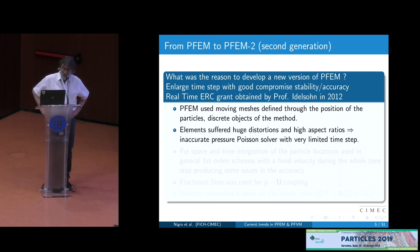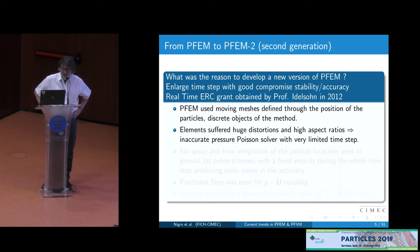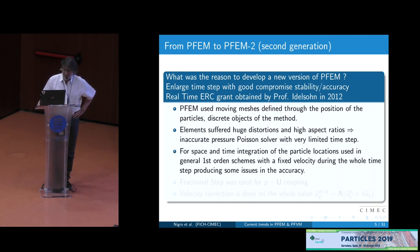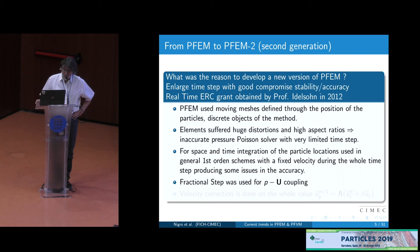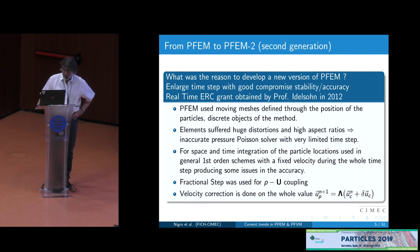This strategy of using a moving mesh suffered high distortion in the mesh, so the time step was severely restricted. Also, the bad quality of the mesh generated produced high inaccuracy in the pressure equation — the Poisson pressure equation. For space and time, PFEM at that moment used first order, fixed velocity during the whole time step, producing some inaccuracies, and used fractional step for the pressure and velocity coupling. For the velocity correction, the correction was applied to the whole value of the velocity in cells, in elements, to move to the particles. That is a tricky point.